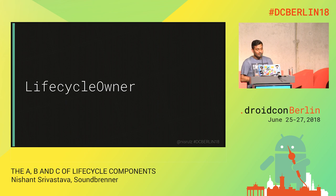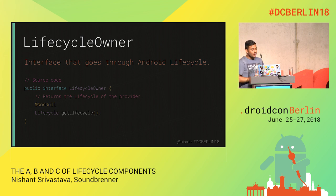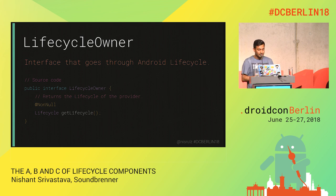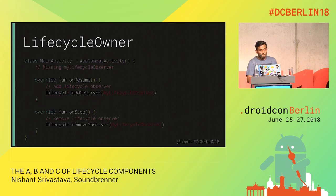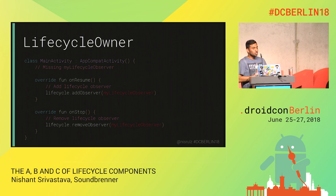The next class is LifecycleOwner, which is basically an interface for going through the Android lifecycle. This is the source code, and it has only one method called getLifecycle. Any class that implements this will override this method to return the lifecycle it implements. Since we know the support library implements LifecycleOwner, we can add observers to this lifecycle — called a LifecycleObserver.